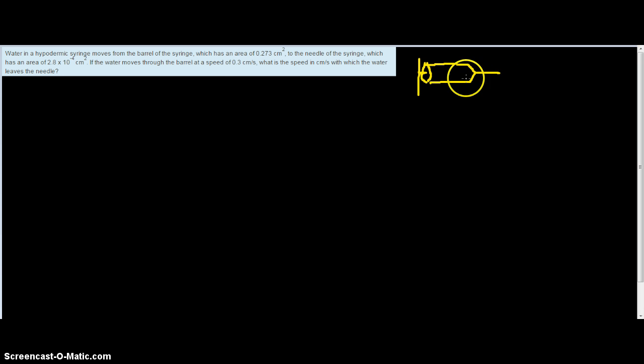So I want to know how fast this stuff is ejected. So we use our continuity equation, which is A1V1 equals A2V2. If we look at the units of the quantities we're given, we're given area, we're given area, we're given velocity, because it tells us the water moves through the barrel. So we know A1, we know V1, we know A2, we want to know what V2 is.